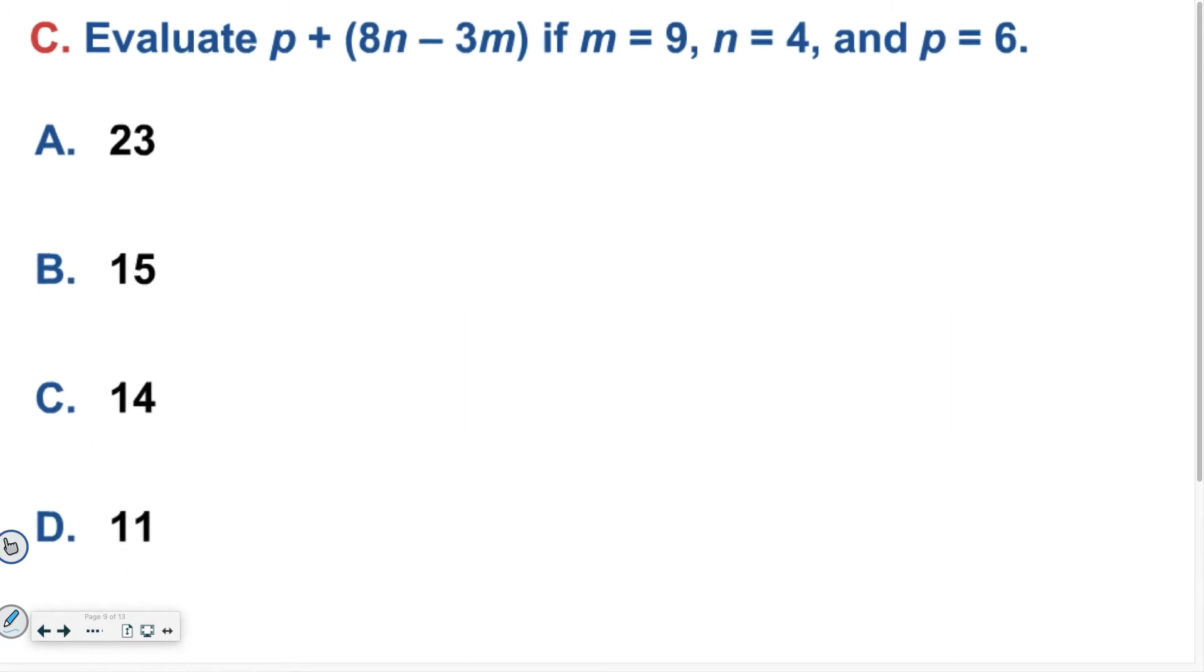Then I want you to try another one. Evaluate P plus the quantity of 8N minus 3M if M equals 9, N equals 4, and P equals 6. Good luck. Hopefully for this problem, you ended up at 11 or letter D. You plugged in all of the numbers that you knew, and your work looks something like what I have over on the right. If it doesn't, please be sure to raise your hand and ask a question, okay?